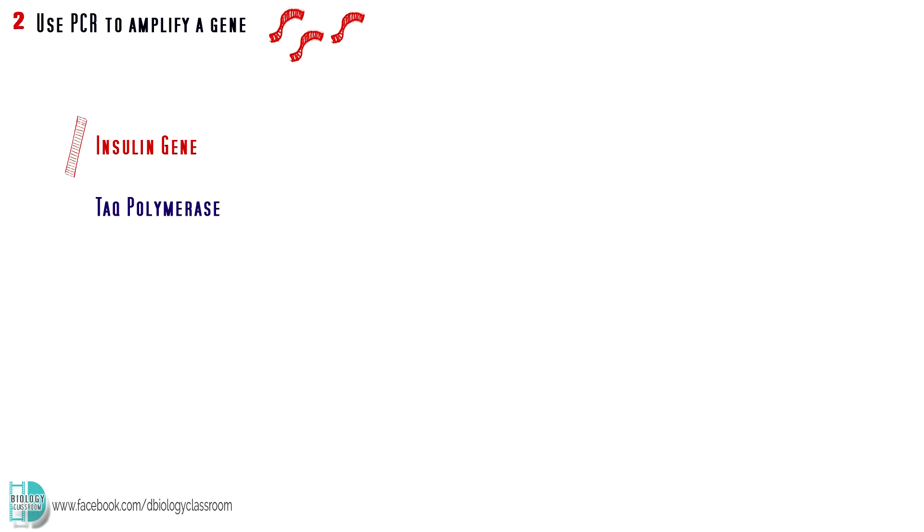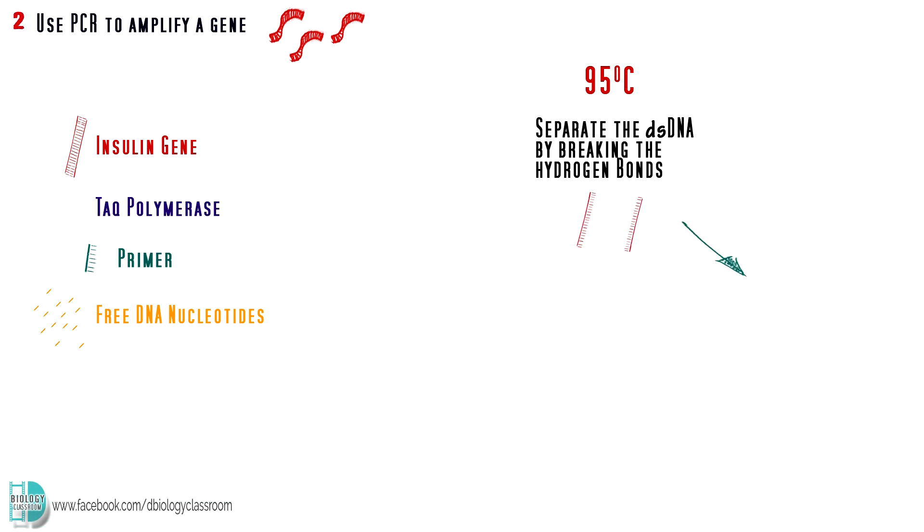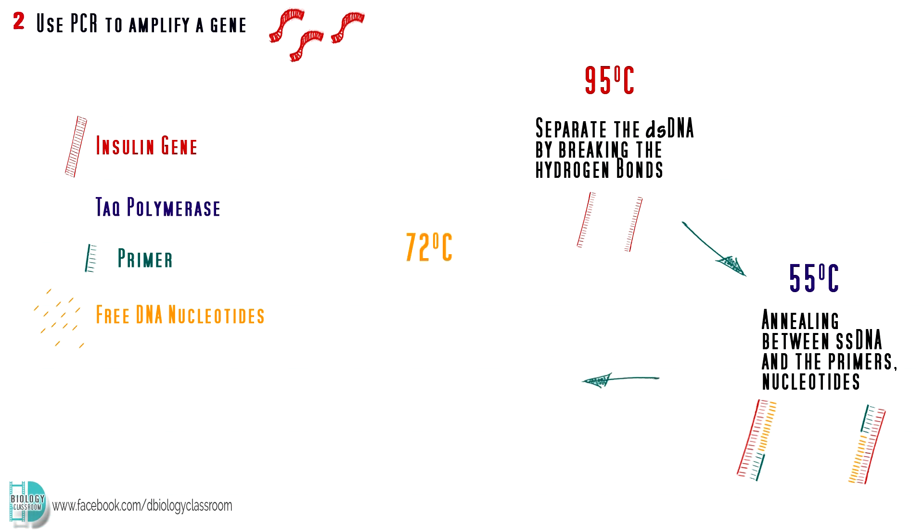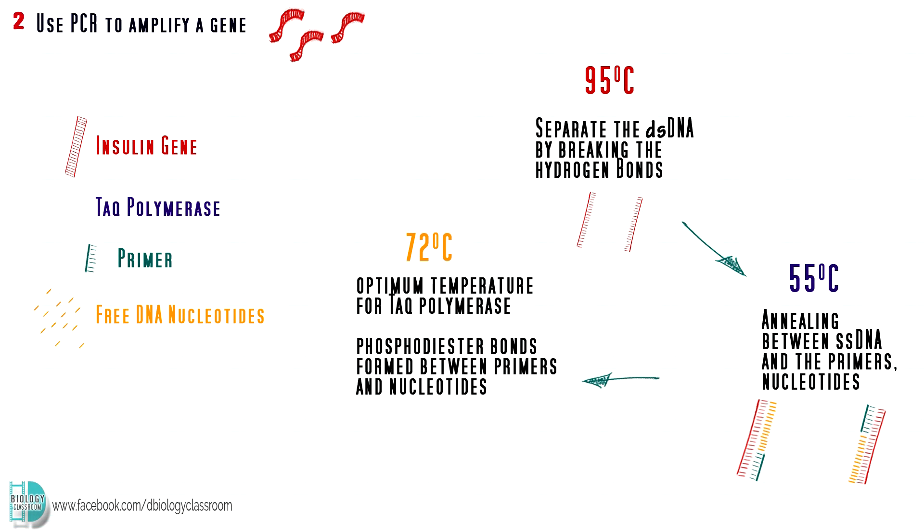First, incubate the insulin gene with a type of DNA polymerase called taq polymerase, primers, and DNA nucleotides. The temperature is increased to 95 degrees Celsius. This will separate the double-stranded DNA. Then, the temperature is reduced to 55 degrees Celsius. Annealing occurs between the single-stranded DNA and the primers, as well as the nucleotides. Lastly, temperature increases to 72 degrees Celsius. This is the optimum temperature for taq polymerase. It will join the primers and the nucleotides together by forming the phosphodiester bonds. When the sugar-phosphate backbone is complete, we now have two double-stranded DNA. The temperature cycle is repeated until a huge amount of DNA is produced.